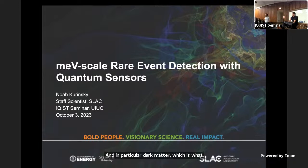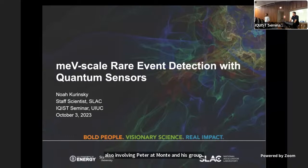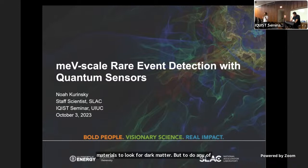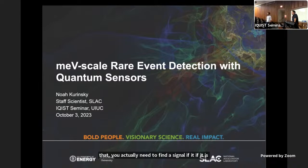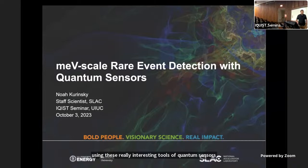We're members of a collaboration also involving Peter Abmonte and his group funded by Los Alamos to look for interesting new materials to look for dark matter. But to do any of that, you actually need to find a signal if it is there. That's what we're going to hear about today using these really interesting tools of quantum sensors to look for really low energy rare stuff. Thanks, Yoni. Thanks for having me here today.